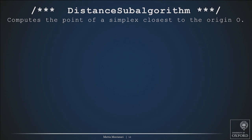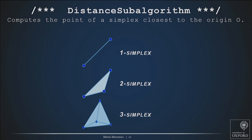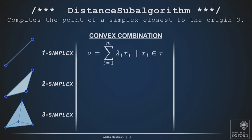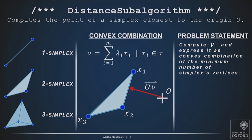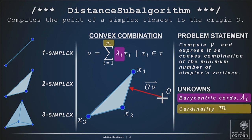The distance sub-algorithm has to compute the point of a simplex which is closest to the origin. These are the three simplexes you can have in three dimensions. You want to find the closest point and express it as a convex combination. For example, you have a triangle and the origin — you can find the point of minimum norm, the point on the triangle which is closest to the origin, identified by the red vector. But that's not enough. The problem you really want to solve is to compute the point nu, then express it as a convex combination of the minimum number of simplex vertices. In this particular example, you want to express nu as a function of x1 and x2, but not of x3. So we need the barycentric coordinates and the subset of the simplex that supports the point of minimum norm.